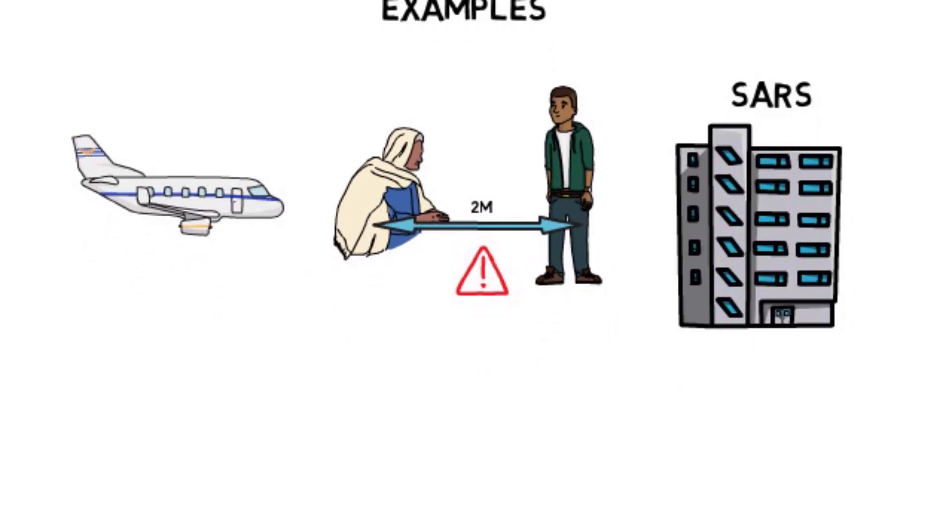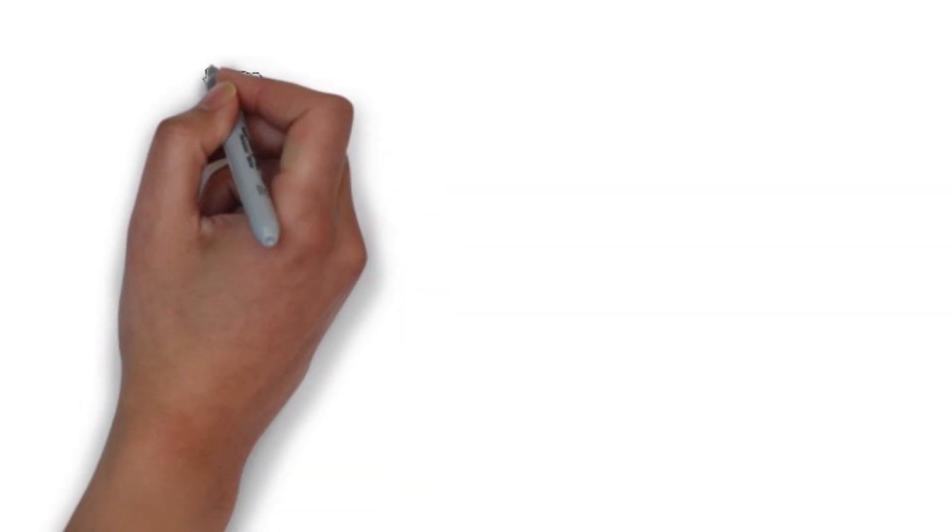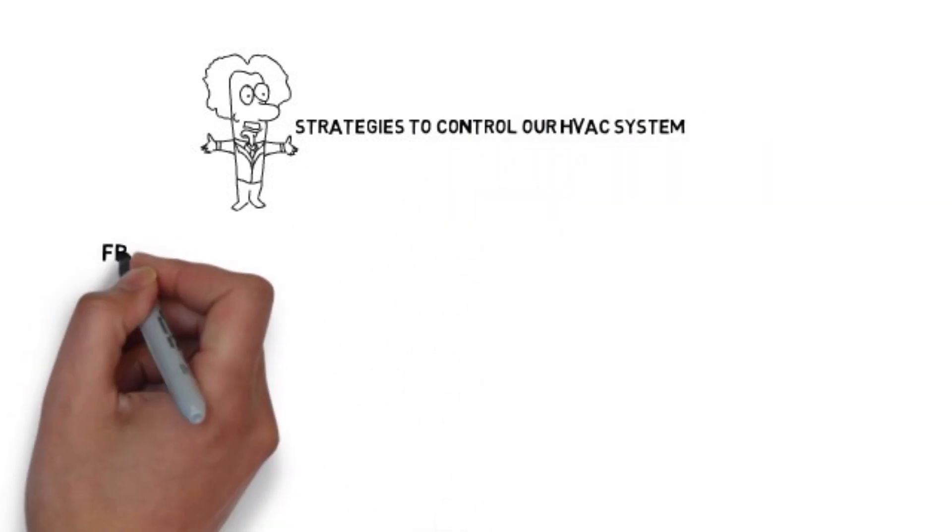Since we don't know yet if the new COVID-19 coronavirus can transmit through aerosols, what are the strategies to control our HVAC systems to minimize the risk of infection in buildings? First, increase the outdoor airflow rate, bringing more fresh air into the room to dilute the droplet concentration, possibly by natural ventilation, opening windows more often.